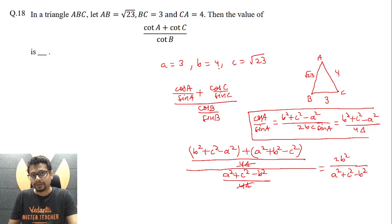In fact, I know a, b, c. So this essentially becomes b² is 16, a² is 9, c² is 23. When we place them appropriately, I get essentially 32 / 16. So my final answer essentially becomes 2.